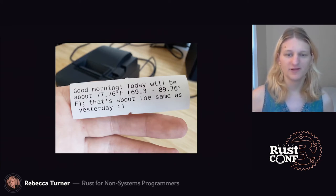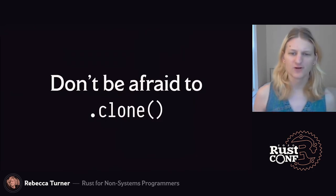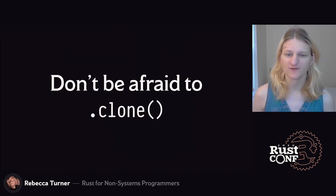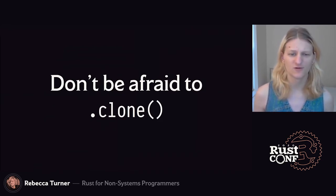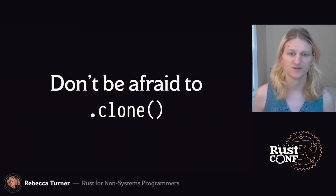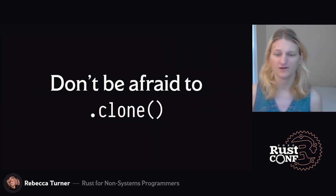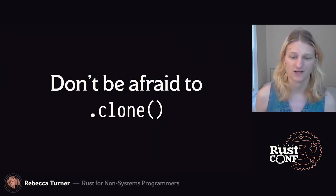Before I go, let me leave you with one last piece of advice. If you're writing a Rust program and you're trying to work with references and it's just not working — clone your data. Cloning can fix a lot of annoying problems, and it's rarely a performance issue when writing scripts or command line interfaces, particularly when compared with dynamic languages. But if you end up in those circumstances, you can always ask another Rust programmer for help. Our community is full of kind and helpful people willing to share a few minutes of their time to help fix errors you don't understand.